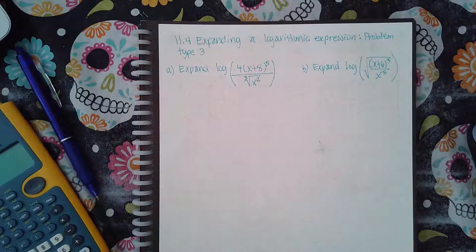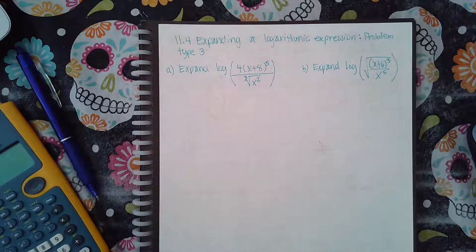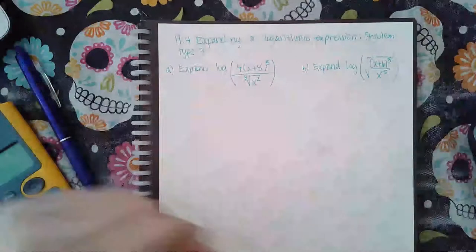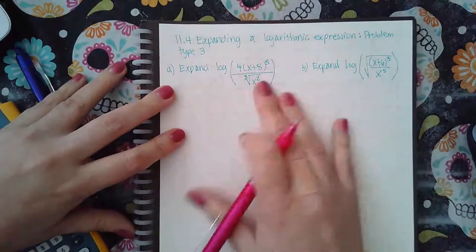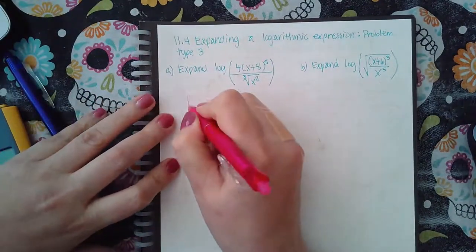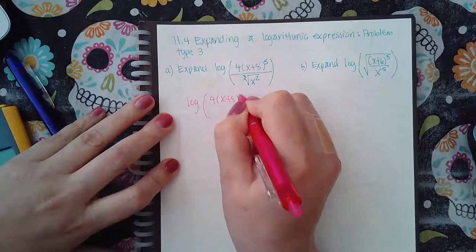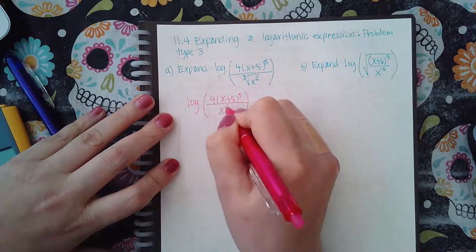The first one I'm going to apply here, I'm actually going to have to fix the radicals first. We do have a radical in part a, so I'm going to rewrite this as 4x plus 8 to the fifth and then the bottom I'm going to write as x to the two-thirds.